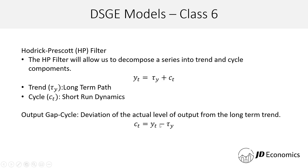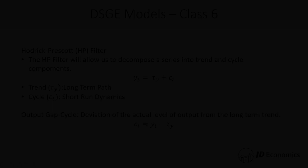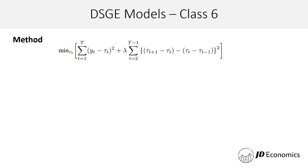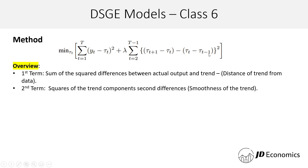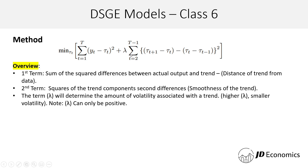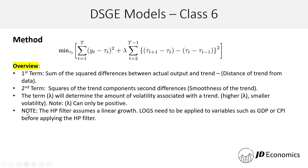What we are doing is saying that the cycle is equal to the difference between the trend and the actual GDP. Without getting into very deep details, with the HP filter: in the first term we have the sum of the squared differences between the actual output and the trend; in the second term we have the square of the trend component's second differences, which shows the smoothness of the trend. The term lambda determines the amount of volatility associated with the trend — the higher the lambda, the smaller the volatility.